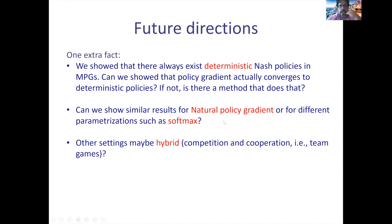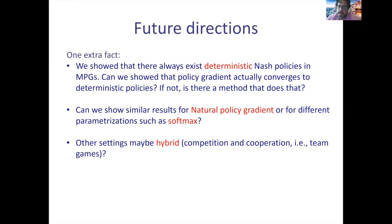Other questions: instead of policy gradient, what about natural policy gradient — a more second-order method with good properties? What about other parameterizations — if we use softmax parameterization can we show similar results? For single-agent settings, we only have asymptotic convergence for softmax parameterization on policy gradient, no convergence rates. For multiple agents in Markov potential games we have no clue. Are there any other settings — perhaps hybrid settings with both zero-sum competition and cooperation?